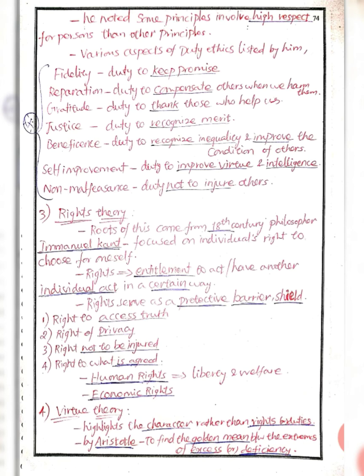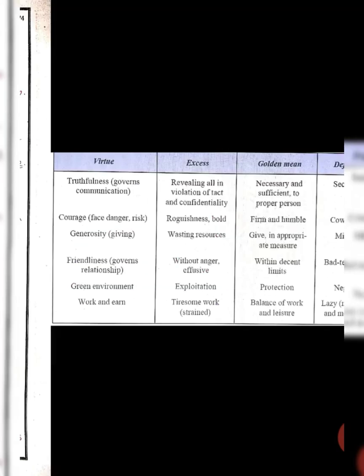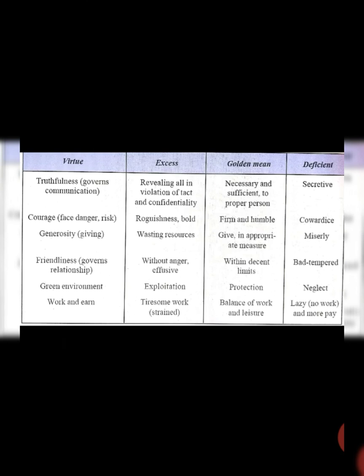Next is Virtue Theory. This is the main character — no rights or duties, mainly highlighting the character. It is proposed by Aristotle. The concept of the golden mean is central. Virtues include: Truthfulness, Courage, Generosity, and Friendliness.